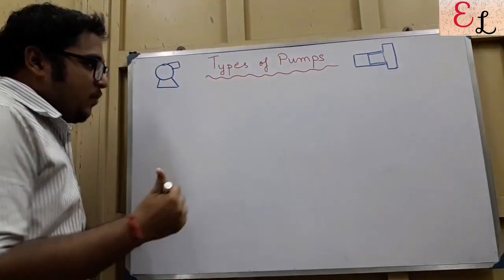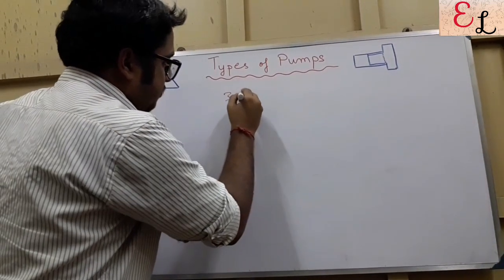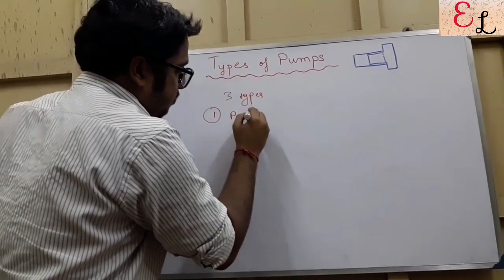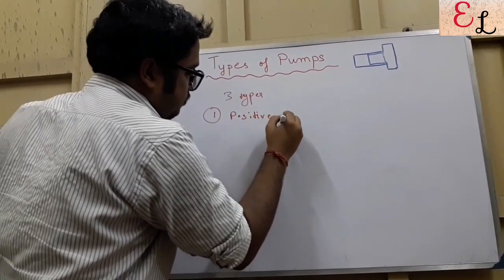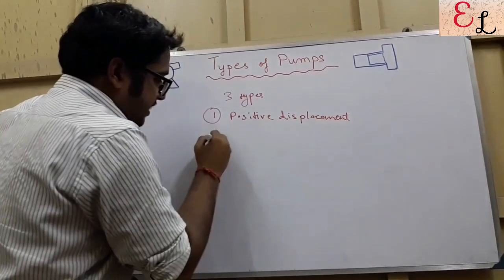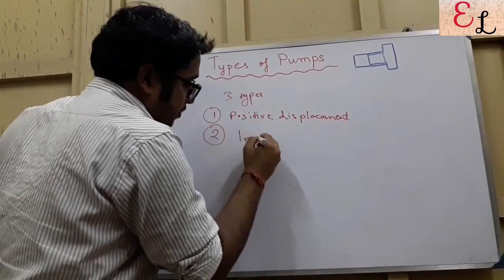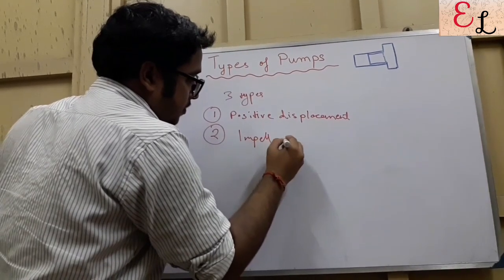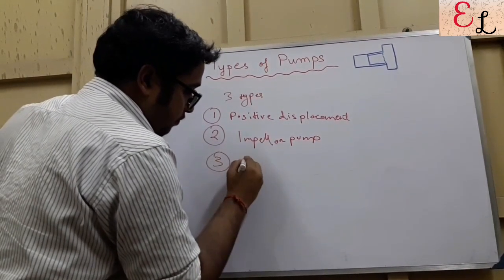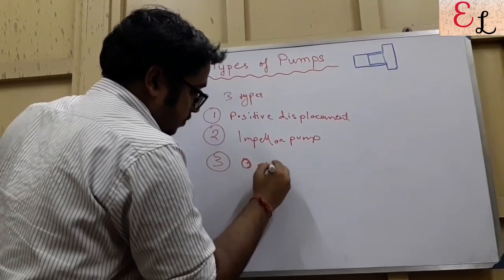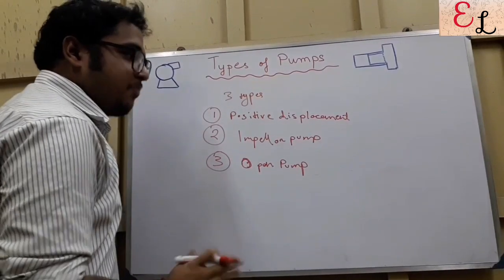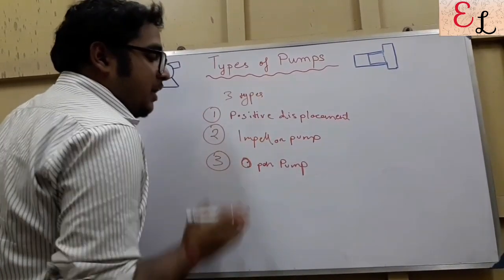So let's start. We have covered three types of pumps in this video. First of all, positive displacement pump. Second is centrifugal pump or impeller pump. And third, last but not the least, open pump. It also falls in a category of positive displacement pump, but how it is different we will talk about that.